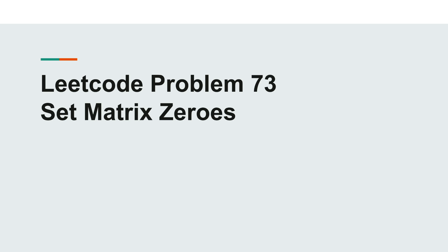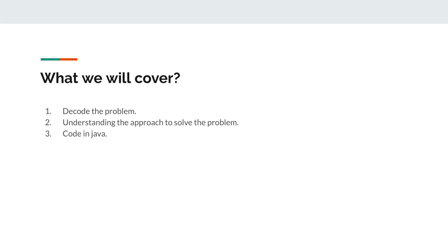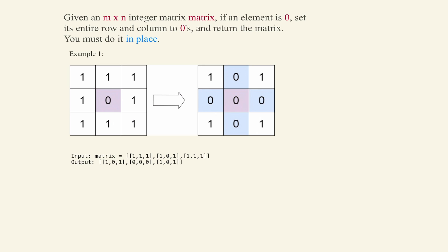Hello friends, in this video we will solve LeetCode problem number 73: Set Matrix Zeros. First we will understand the problem statement, after that we will see the approach for this problem, and at the end we will see code in Java. The question says that we have a given N×M matrix — if an element is 0, we need to set its entire row and column to 0, and we need to do it in-place, meaning we will not create any other matrix.